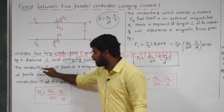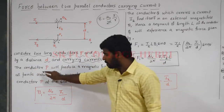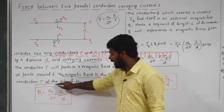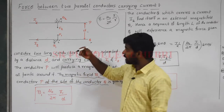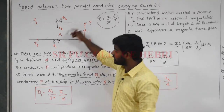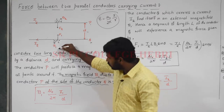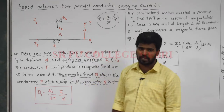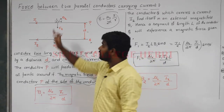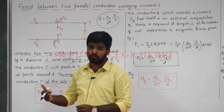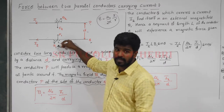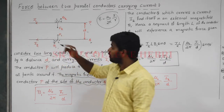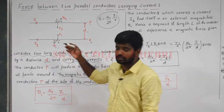Conductor P produces a magnetic field at all points around it because it carries current I1. Therefore, the magnetic field B1 due to conductor P at the side of conductor Q is given by: B1 = μ₀ / (2π) × I1 / D, where D is the distance between the two parallel conductors. According to the right-hand rule, the magnetic field B1 acts in the outward direction when the current is on the left side.